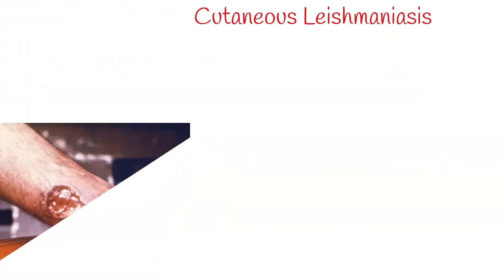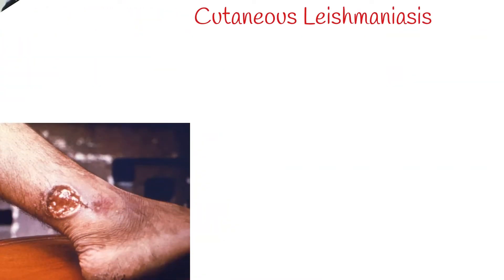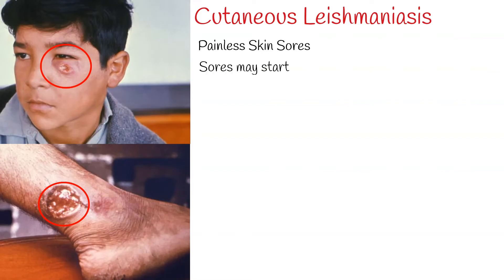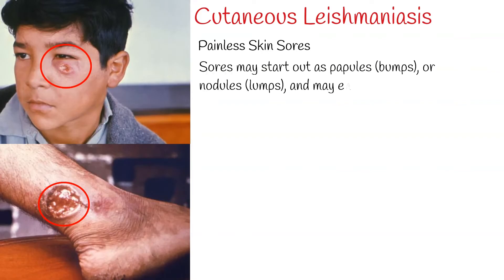Cutaneous leishmaniasis is the most common form and causes skin lesions, mainly ulcers. The sores typically develop within a few weeks or months of the sandfly bite. The sores are usually painless but can be painful. Some people have swollen glands near the sores — for example, under the arm if the sores are on the arm or hand.